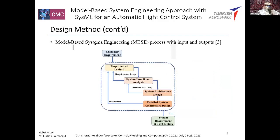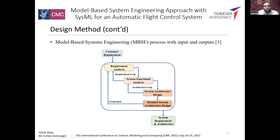The model-based systems engineering process takes customer requirements as input. With this method, the outputs are system requirements and architecture — in other words, a roadmap for design engineers. Customer requirements feed into the MBSE process through a requirements loop at stages one and two, and an architecture loop at stages two and three, with a verification stage at stage four. The output system requirements and architecture serve as a roadmap for design engineers.